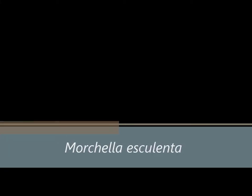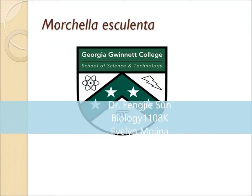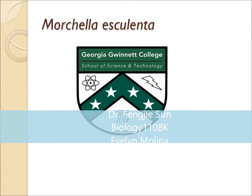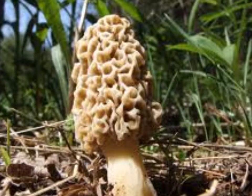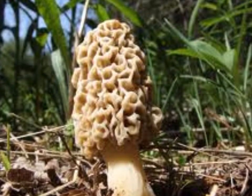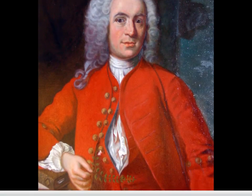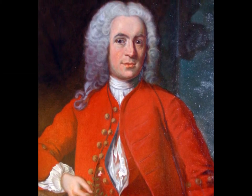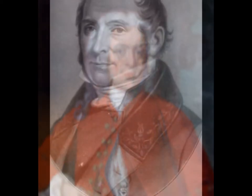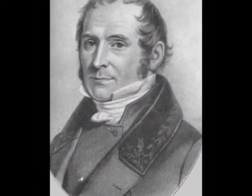Morchella esculenta, by Evelyn Molina. Morchella esculenta is a type of fungus that was originally named Phallus esculentus by Carl Linnaeus in 1753 and changed to the current name by a Swedish mycologist, Elias Magnus Fries, in 1801.